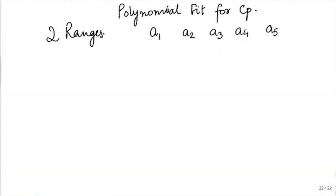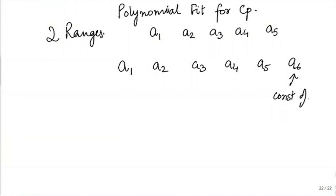Integrating Cp dT you will get H. You will need a constant of integration which depends on the enthalpy of formation at standard state, which is 25 degrees. So you will get a1, a2, a3, a4, a5, and a6, which comes from the constant of integration. Similarly, for S you will have a constant of integration a7 which tells you the entropy at 25 degrees C. So if I put T = 298 K I should get my value for entropy at 25 degrees C.